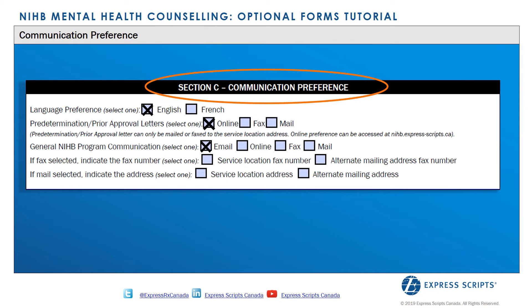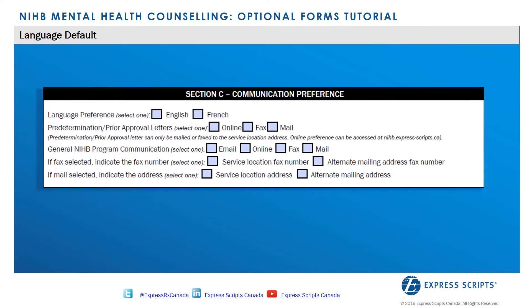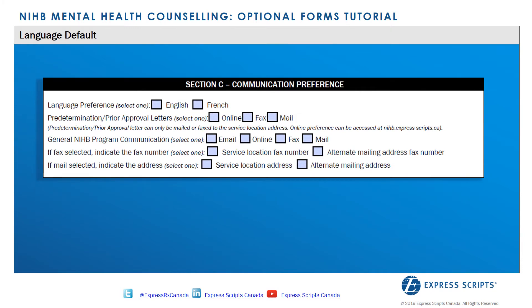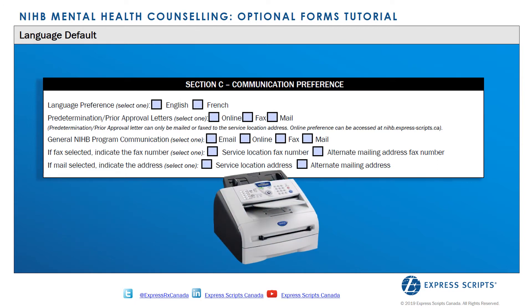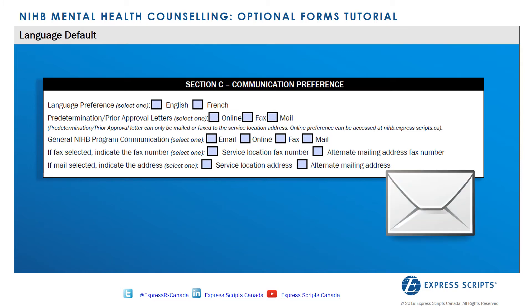Please note, emergency program communications will be sent by email whenever possible to avoid delays, even if the provider has selected mail as their primary method of communication. If this section is not completed, the provider's communication preferences will default to the following settings: if an email address is provided, the preference defaults to email; if no email is provided but a fax number is, all items will be sent via fax; if neither fax nor email is provided, the preference defaults to mail.